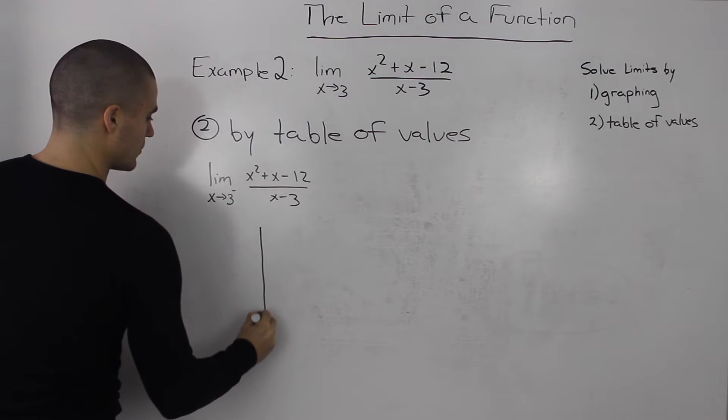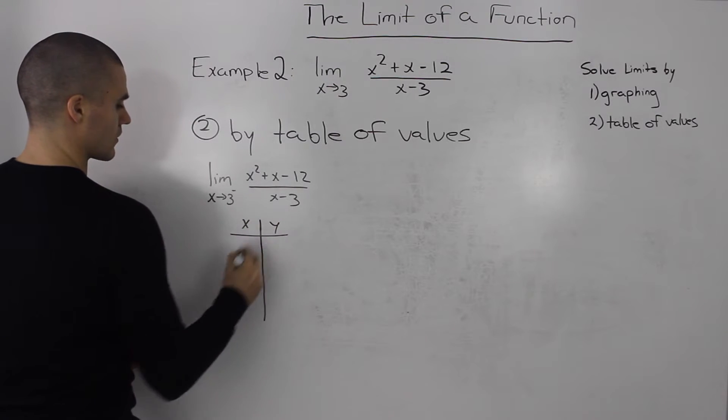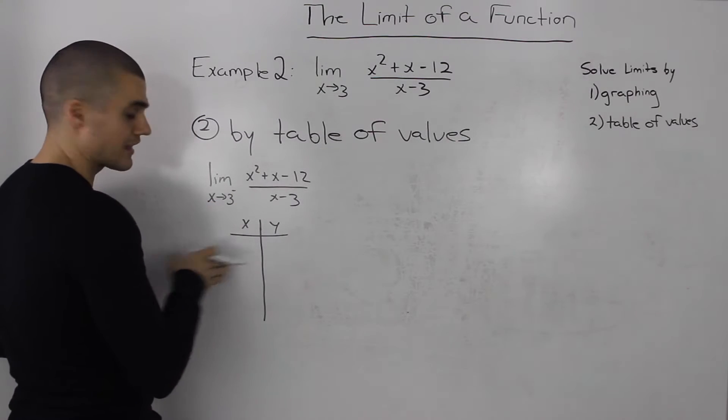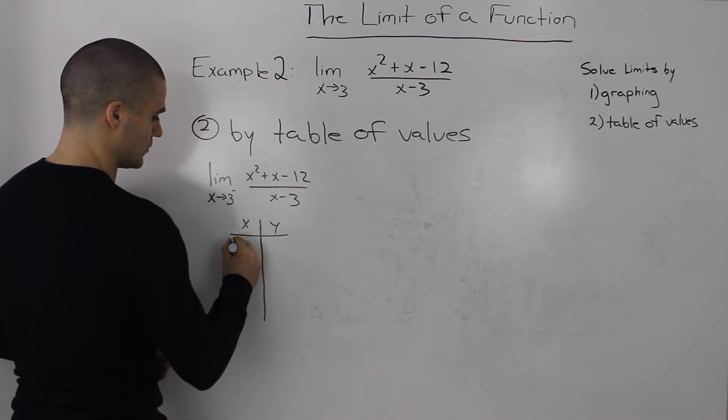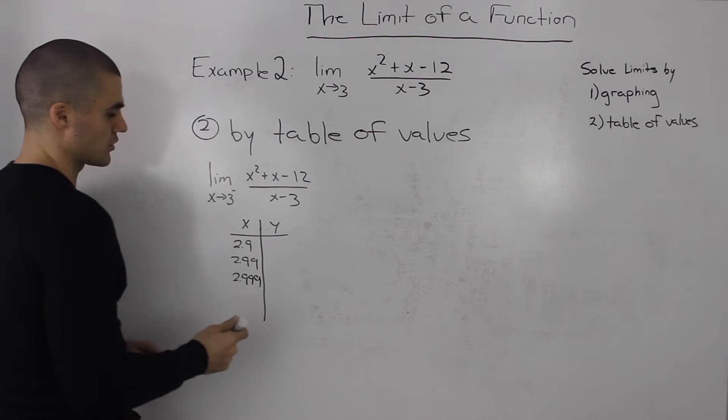If we do a table of values, what x values will we use when approaching 3 from the left side or negative side? We can use 2.9, 2.99, and one more to get closer to 3.